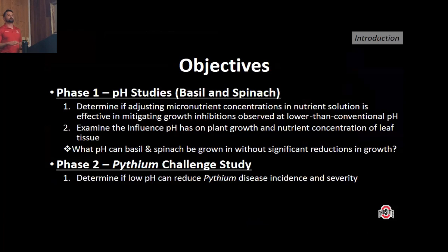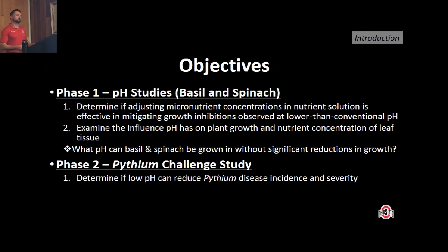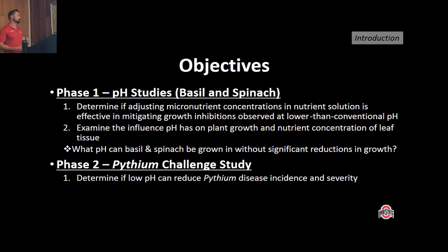This research was broken into two phases. The first phase focused on our pH studies, examining how pH affects basil and spinach plant growth — specifically whether adjusting micronutrient concentration based on reported availability levels can mitigate growth inhibitions at lower-than-conventional pH. The second phase was our Pythium challenge study, where we applied what we learned from the pH studies to determine if low pH can reduce Pythium disease in sensitive crops.